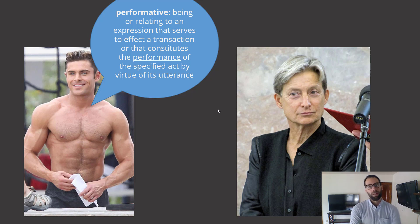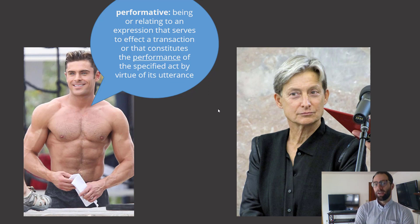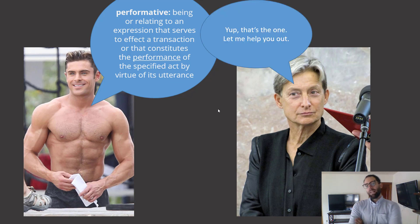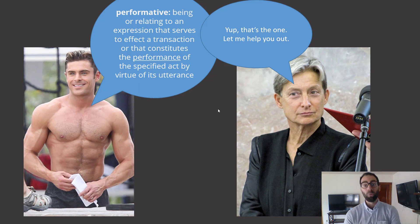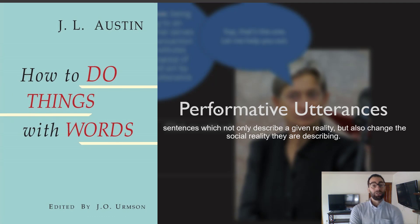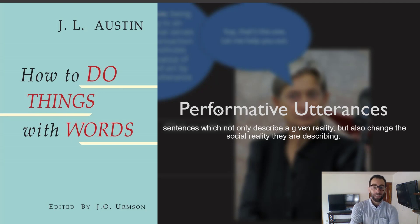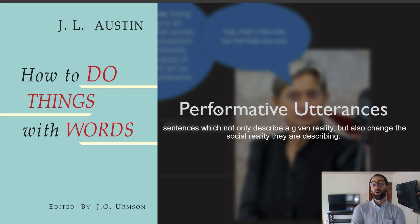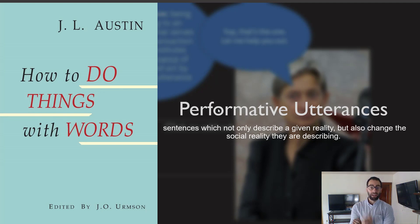Here's the definition of performative that Butler is actually working with: 'being or relating to an expression that serves to effect a transaction or that constitutes the performance of the specified act by virtue of its utterance.' That's the one definition of performative that Butler is in fact working with. It's quite difficult, so we're going to have to work through what that means. This definition of performative comes mostly from the philosopher of language J.L. Austin, a mid-century philosopher of language that Butler has been inspired by. The main concept you can associate with J.L. Austin is what he calls performative utterances — sentences which not only describe a given reality, but also change the social reality that they are describing.